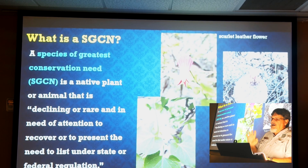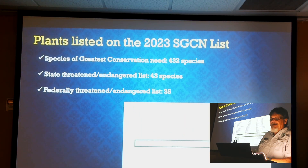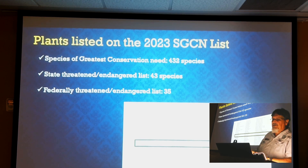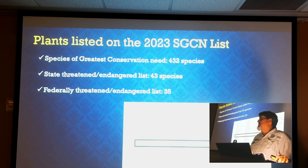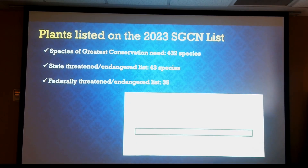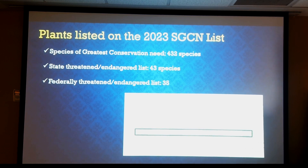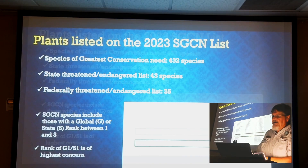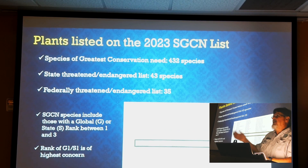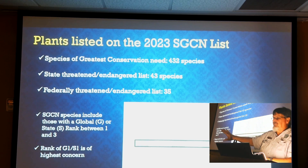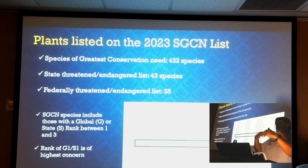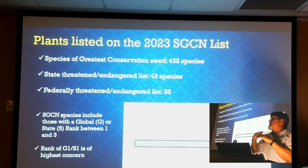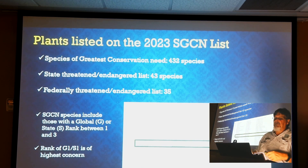Those are the kinds of plants we're looking for. In Texas, for plants alone, we have 432 species considered species of greatest conservation need, 43 species that are state threatened or endangered, and 35 of those are also listed as federally threatened or endangered. There is a database where you can find this information. They use a global rank and a state rank ranging from 5 to 1 — 5 being very common, 3 being vulnerable where they start monitoring, and 2 and 1 being critically rare — a lot of those get ranked as endangered. G rank means global; S rank is the Texas state rank.